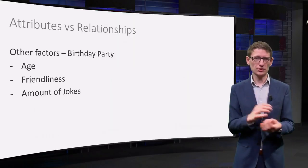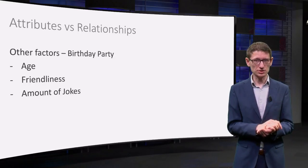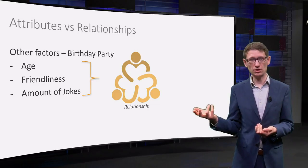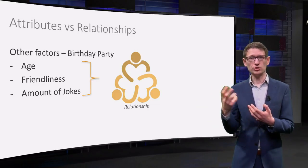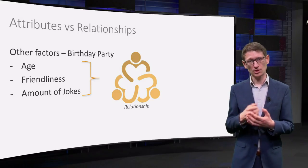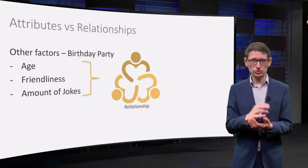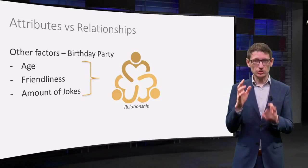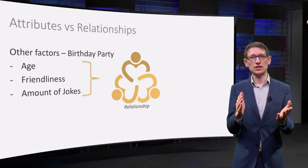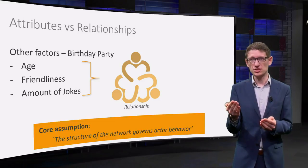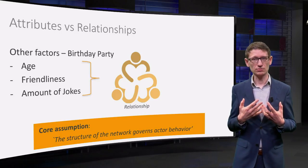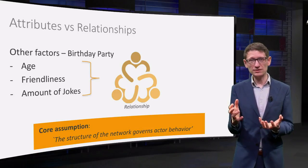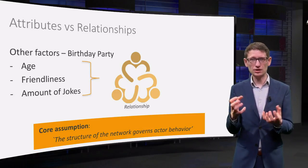Now there are of course a lot of other things that affect your birthday parties — the people's age, friendliness, or the amount of jokes that they know. In other words, the properties or attributes of people. In our example we did not consider these attributes; we just looked at relationships. And that is the core assumption of network analysis: the structure of our relationships governs our behavior. This assumption is what makes network analysis so interesting, but also fundamentally different from most other methods.